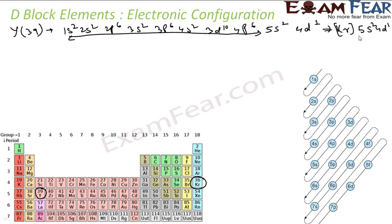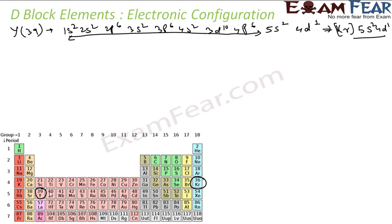5s2 will be 1. So this I can say krypton 36 is krypton. So next element actually is my zirconium 40. It is 40. I can easily say krypton is 36, this is 36, and then I have 5s2, 38, and then I have 4d2, 40. This is the electronic configuration of zirconium.